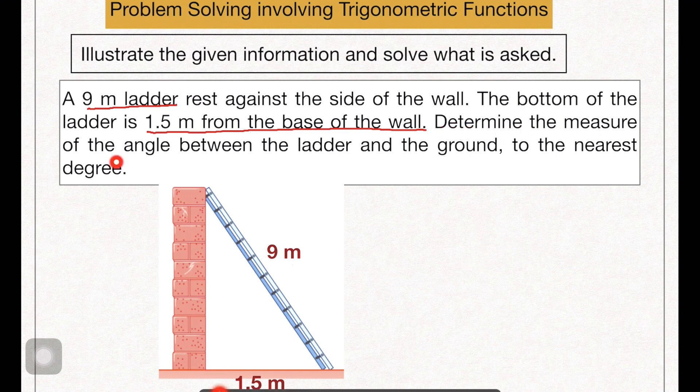The next one is determine the measure of the angle between the ladder and the ground. So how are we going to represent this? This is the one between the ladder and the ground. We can represent this one by x or any variable. Now in this case, remember SOHCAHTOA.